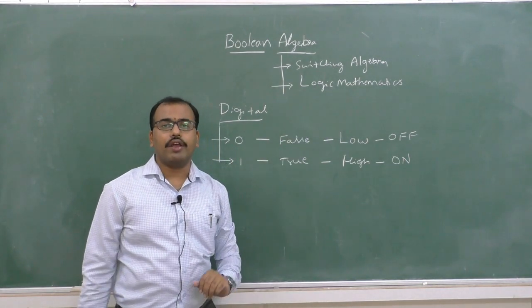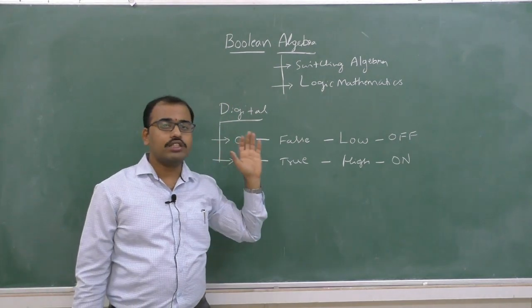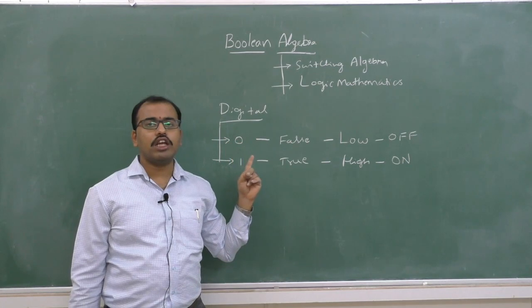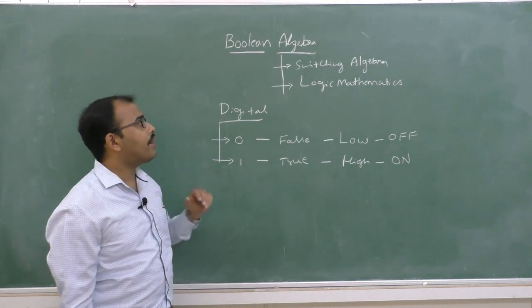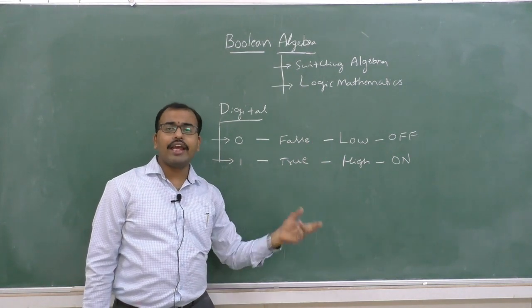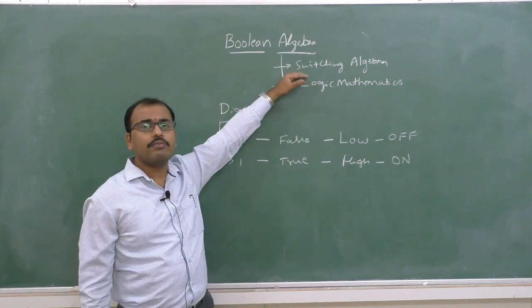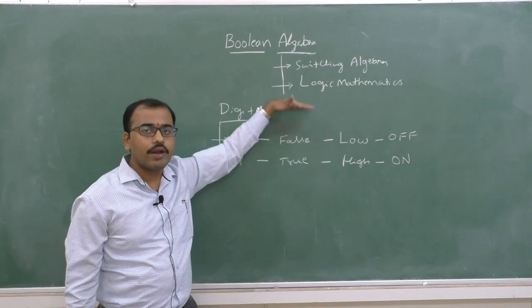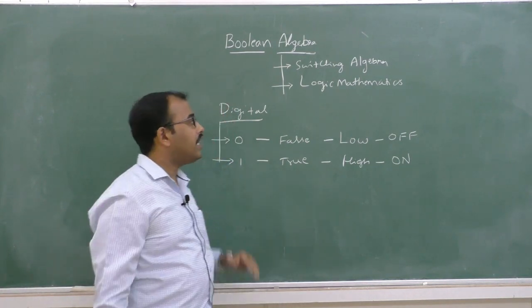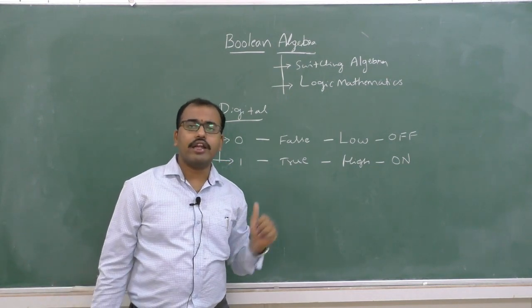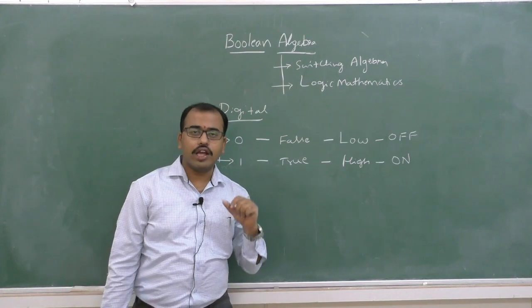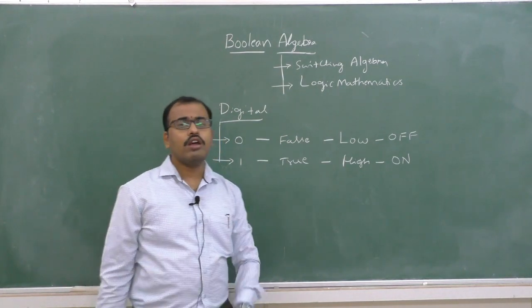So Boolean algebra is a branch of algebra. It deals with binary number systems. Binary numbers have only two possibilities — 0 and 1. These correspond to off and on, or true and false, or low and high conditions. That is why we call it switching algebra. Similarly, Boolean algebra is also called as logic mathematics.